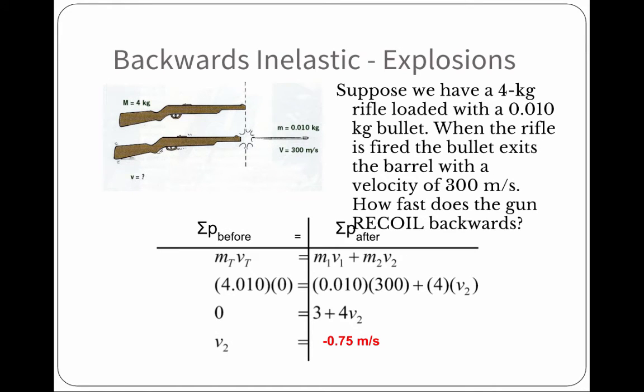The backward or inelastic explosion example. Suppose we have a four-kilogram rifle loaded with a .01-kilogram bullet. When the rifle is fired, the bullet exits the barrel with a velocity of 300 meters per second. How fast does the gun recoil backwards? Well, the total momentum times the velocity before should equal zero, because it's not moving. But notice the math of the total momentum after. The mass times the velocity of the bullet, plus the mass times the velocity of the gun. And we find that its velocity should be a negative .75.